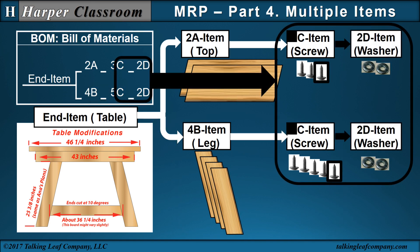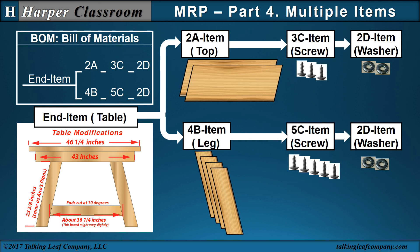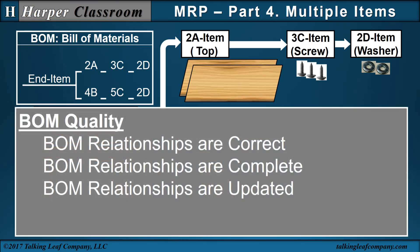Every leg also requires five screws, where the C item is a screw. Every C item requires two D items, which is two washers for every screw. So we have a Bill of Materials with the end item, A item, B item, C item appearing in two places, and D item in two places. The C item has two different parents, and the D item appears twice but has the same source. For BOM quality, the relationships must be correct, complete, and updated as the design changes.